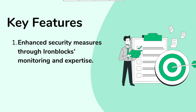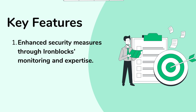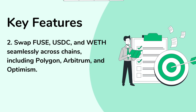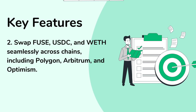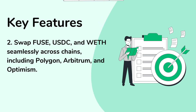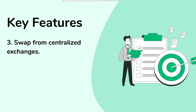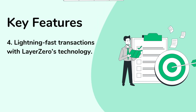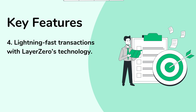Key Features: 1. Enhanced security measures through IRONBLOCK's monitoring and expertise. 2. Swap Fuse, USDC, and WET seamlessly across chains, including Polygon, Arbitrum, and Optimism. 3. Swap from centralized exchanges. 4. Lightning-fast transactions with LayerZero's technology.